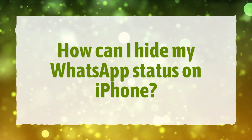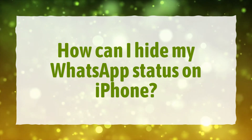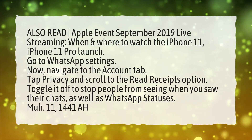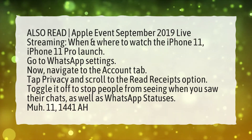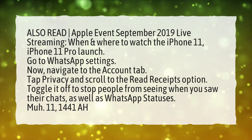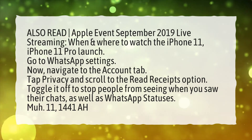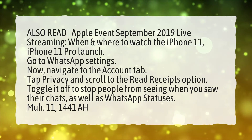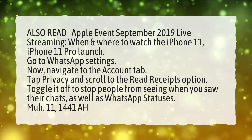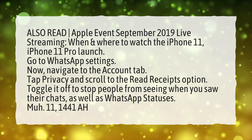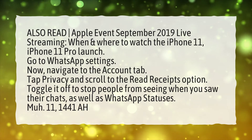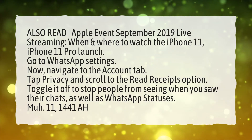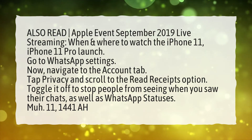How can I hide my WhatsApp status on iPhone? Go to WhatsApp settings. Now navigate to the Account tab. Tap Privacy and scroll to the Read Receipts option. Toggle it off to stop people from seeing when you saw their chats, as well as WhatsApp statuses.